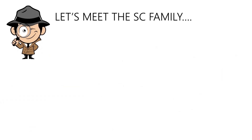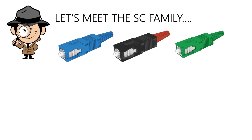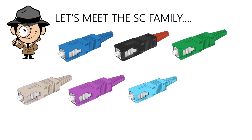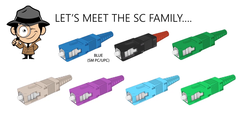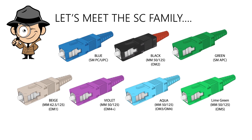Now it's time to meet the SC connector family. SC connectors are color coded to distinguish between the different types — they are made for single mode and multi-mode connectors. Blue is for single mode UPC (ultra physical contact) and green is for single mode APC (angled physical contact) connectors. Multi-mode SC connectors often use PC polished ferrules and the outer housing color tells the different fiber types from OM1 to the latest OM5.